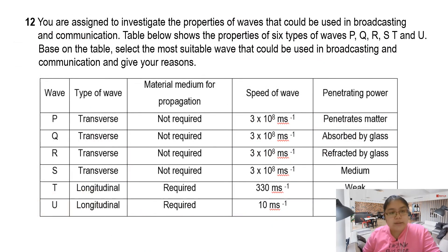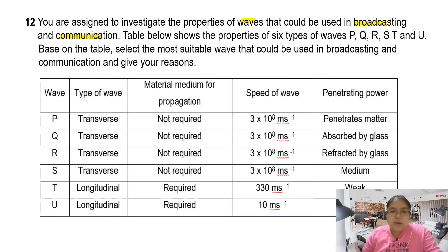Then we go to the last question — there's an AC question. From here, they said you need to investigate the properties of the wave used for broadcasting. Broadcasting means a radio wave for communication. Now the table shows the properties of six types of waves: P, Q, R, S, T, and U. Based on the table, you need to select the most suitable wave that could be used for broadcasting and telecommunication. I also give the reason.